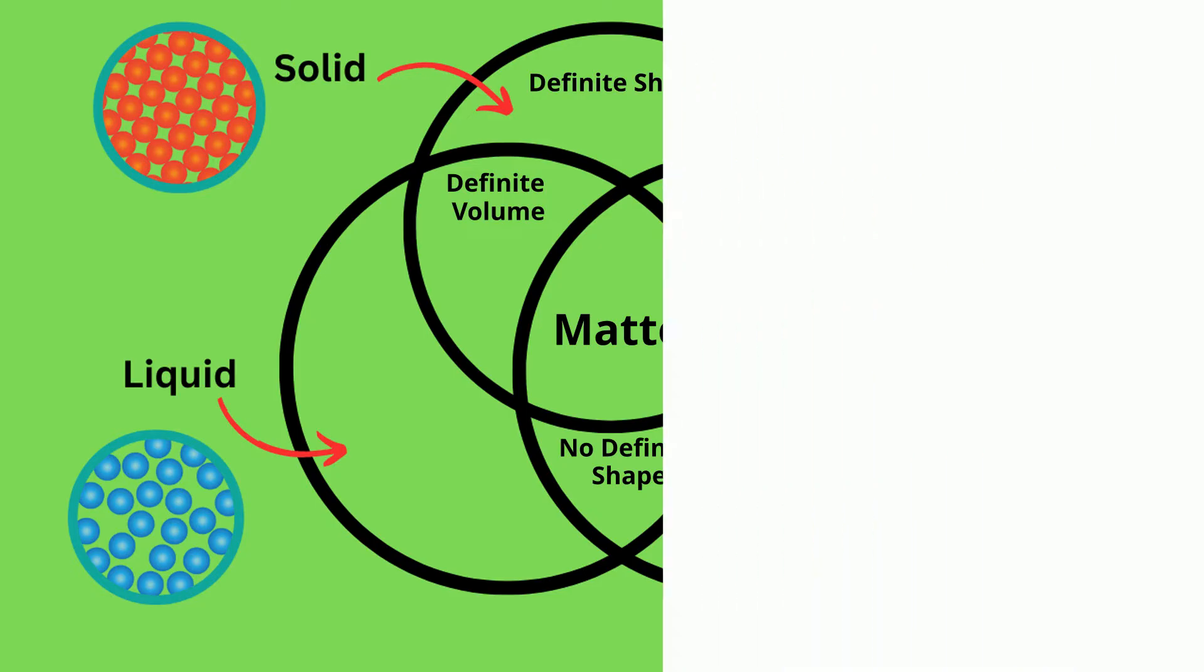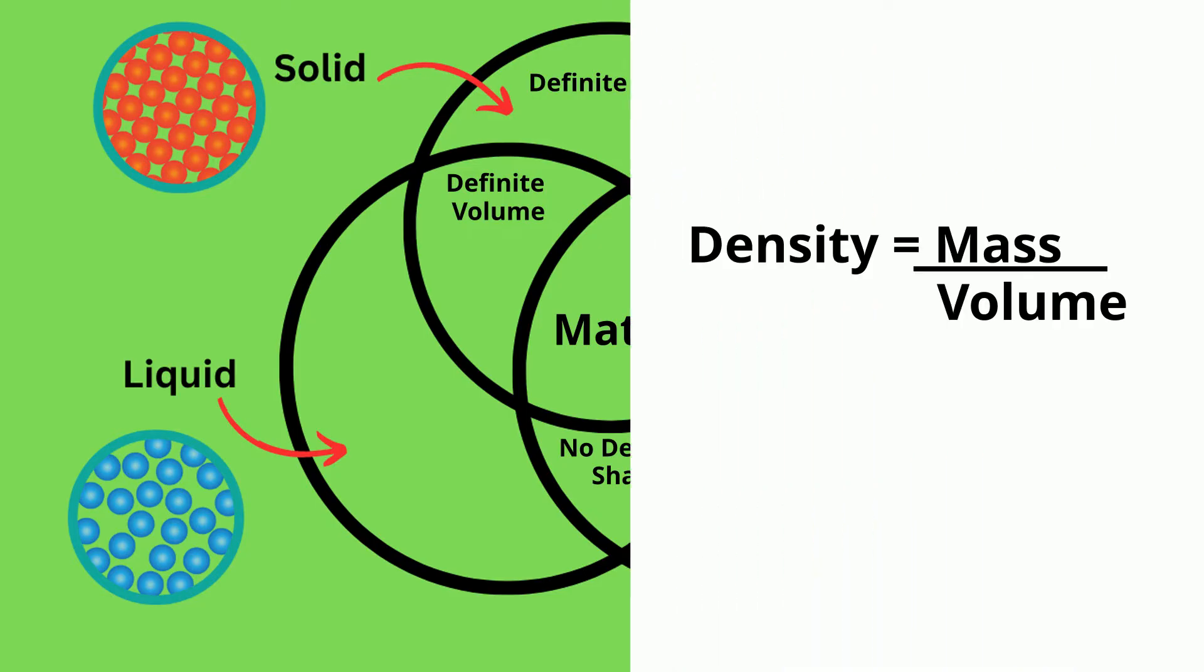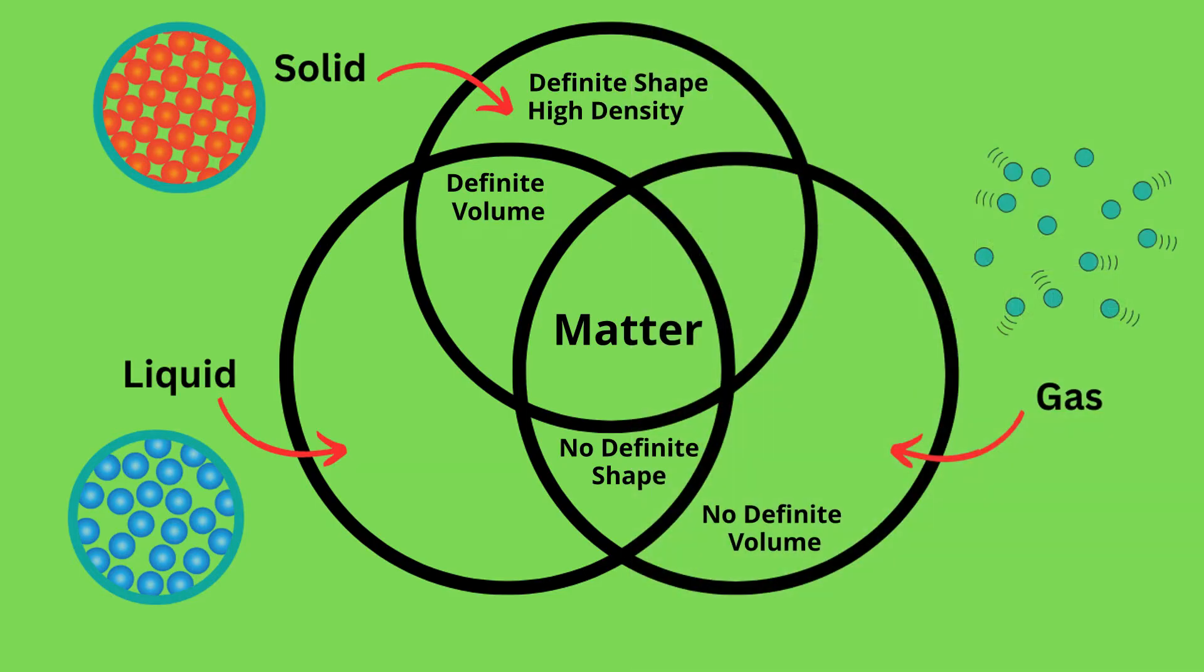How about density? And if you remember, density is mass divided by volume. A solid has high density. A liquid can be medium to high. And then a gas has a very low density.